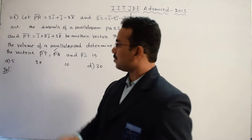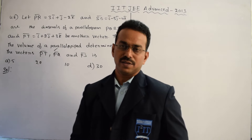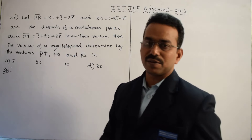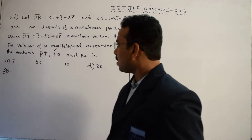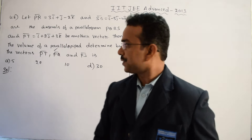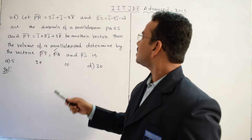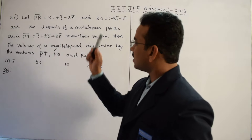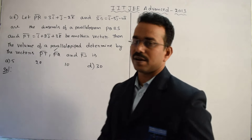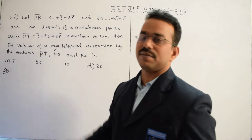The question mentions that the parallelopiped is formed by three vectors PT̄, PQ̄, and PS̄. So directly you can apply the formula: volume of a parallelopiped formed by these three vectors equals the scalar triple product of PT̄, PQ̄, and PS̄. PT̄ is already given. PQ̄ and PS̄, which are the sides of parallelogram PQRS, we have to calculate from the given diagonals.